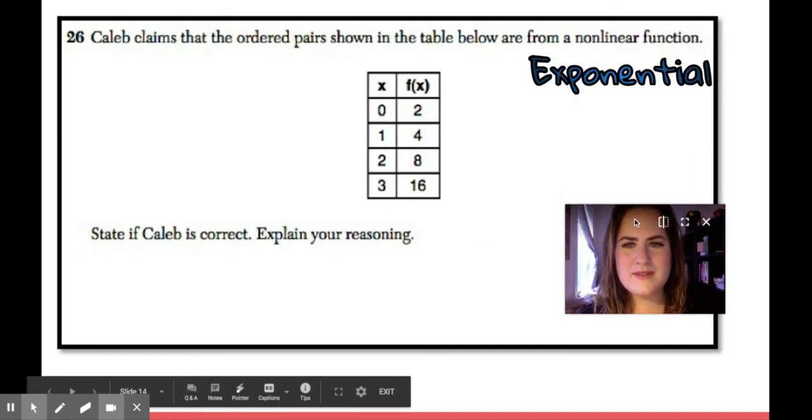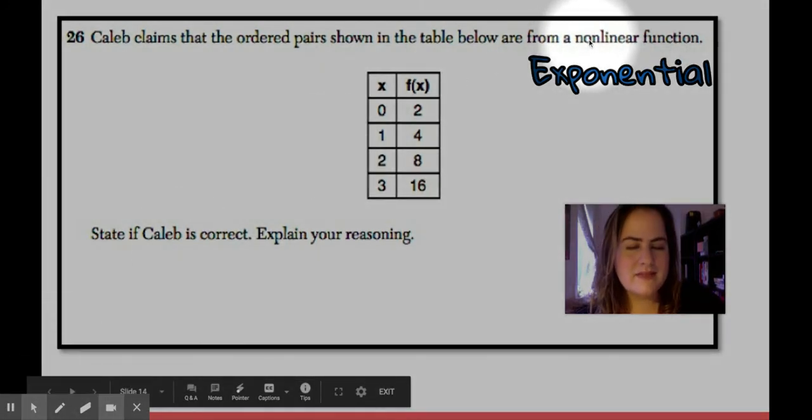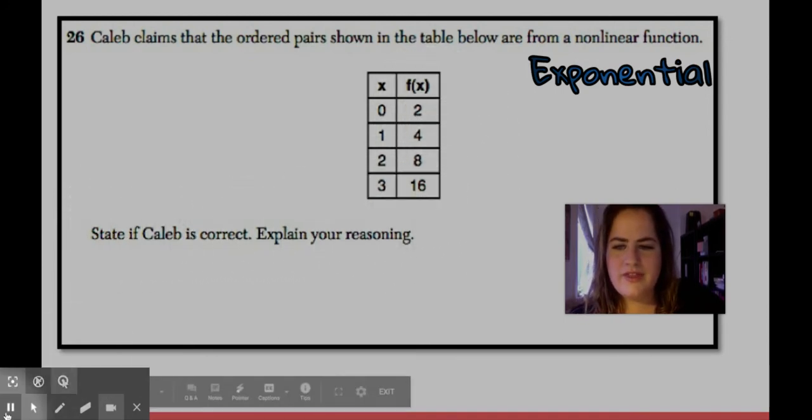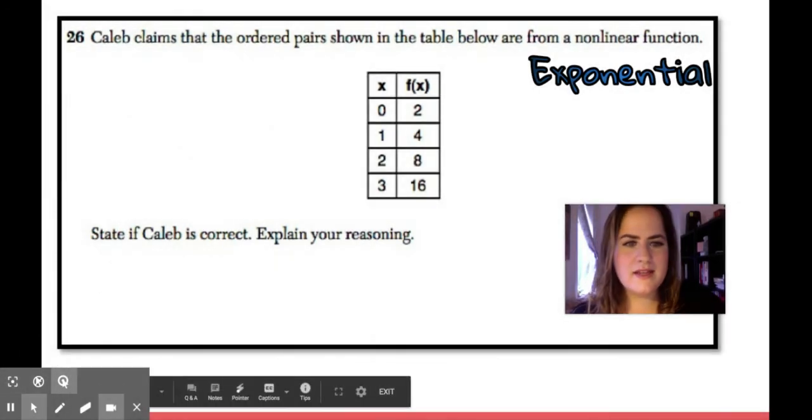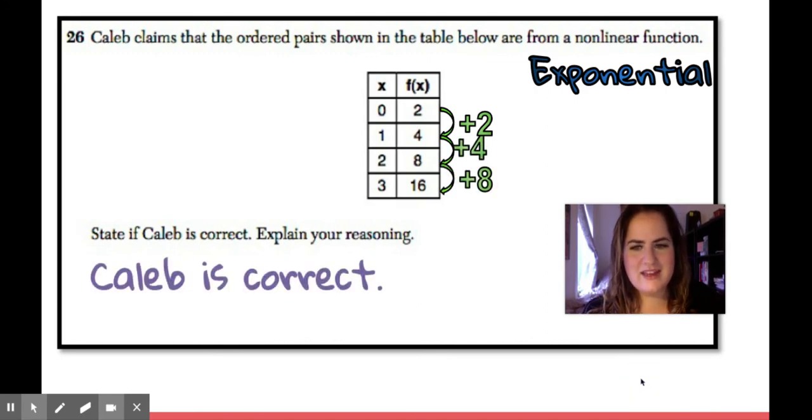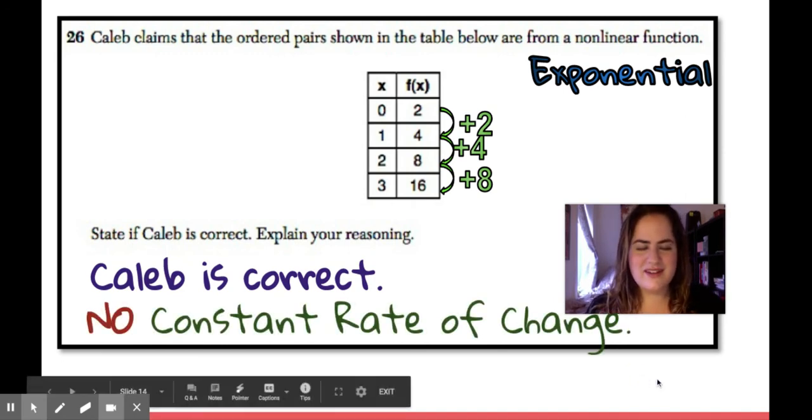Okay, a word problem. So Caleb says that the table below is non-linear. So something's not linear. Exponential. They could have just said exponential, but they're rude. So we have to do two things. State if Caleb is correct and explain. So what do you think? Is this going to be linear or exponential? Here's how I do it. To get from two to four, it's plus two. To get from four to eight, plus four. To get from eight to 16, plus eight. So Caleb is correct. It's not linear. It's exponential because there is no constant rate of change.